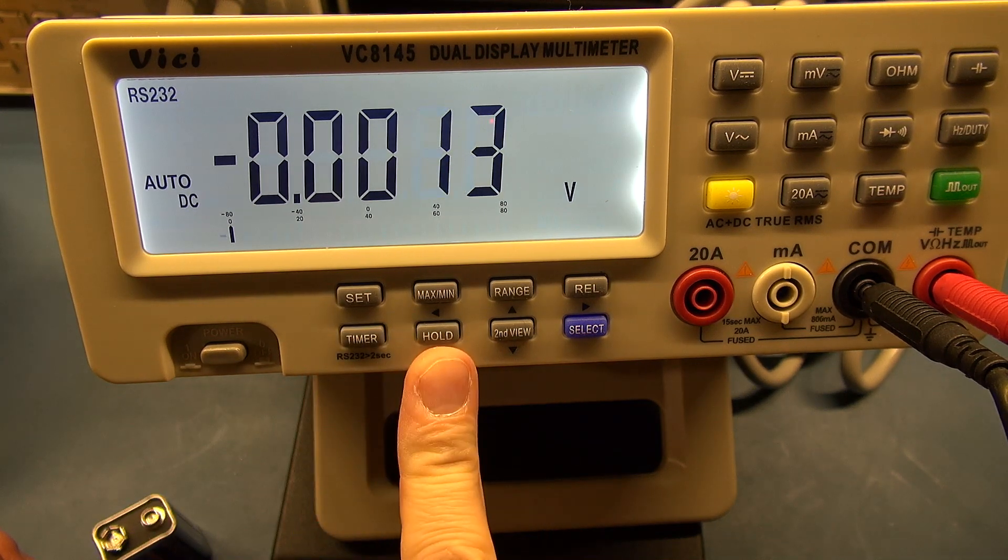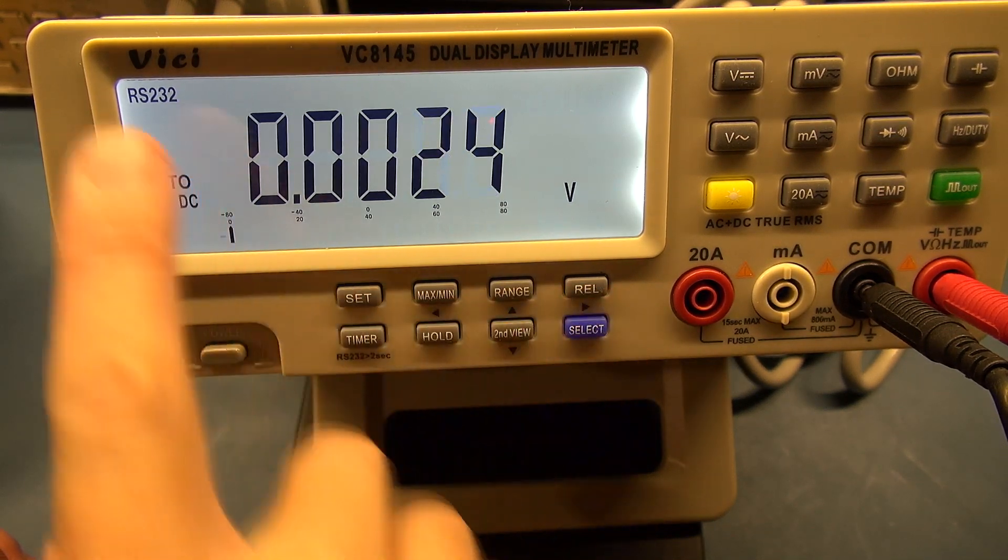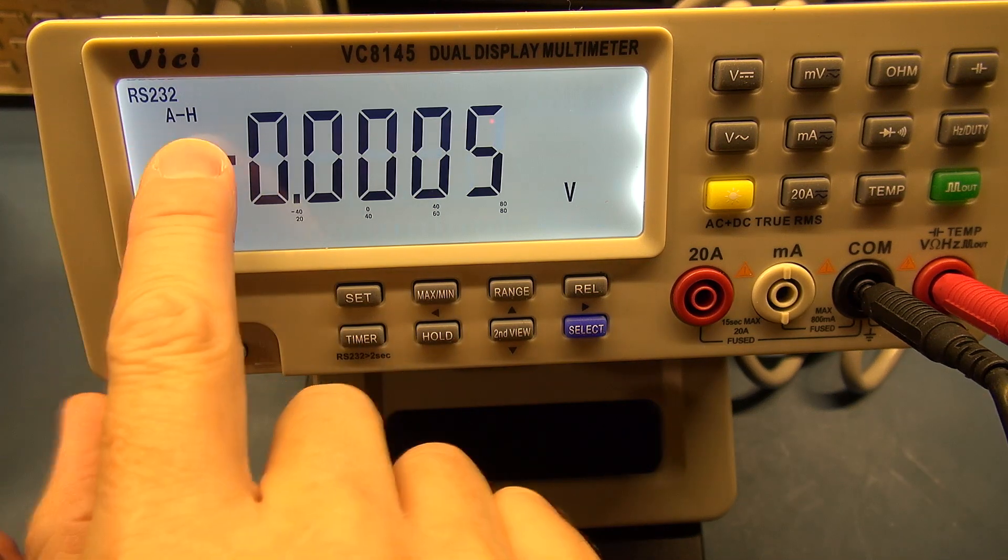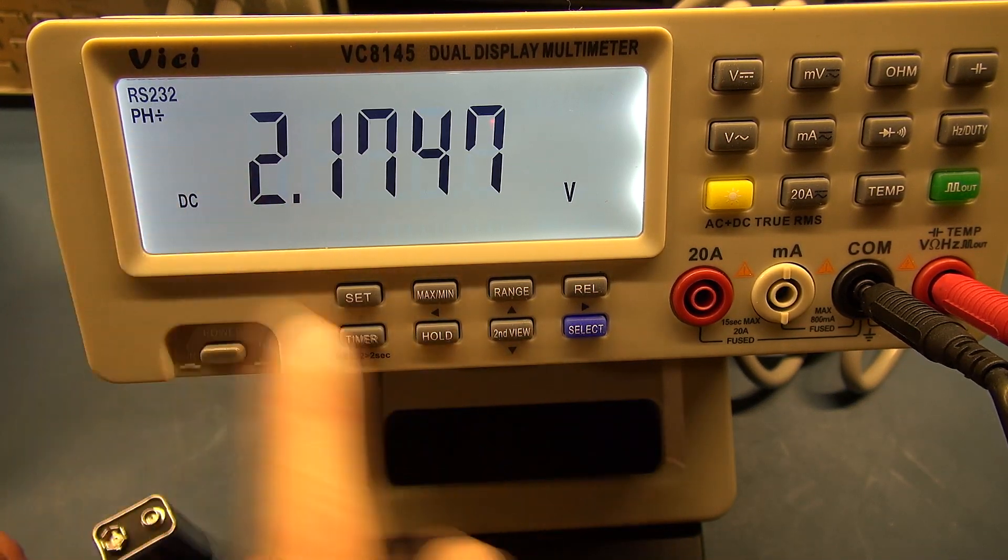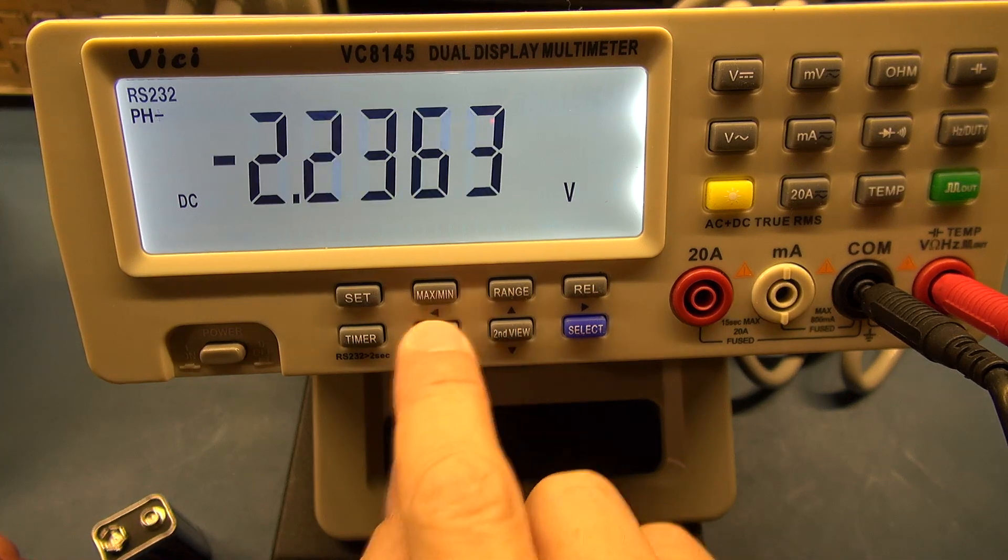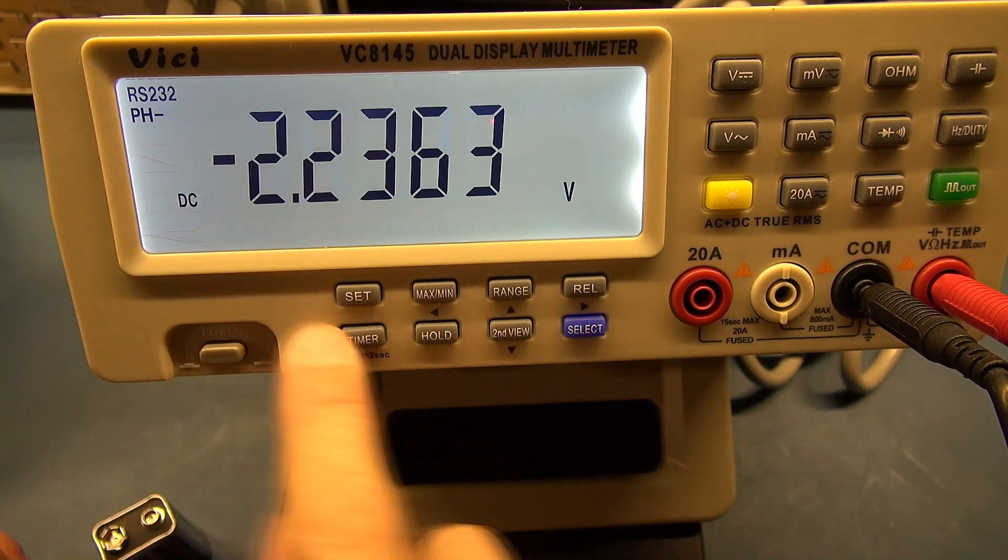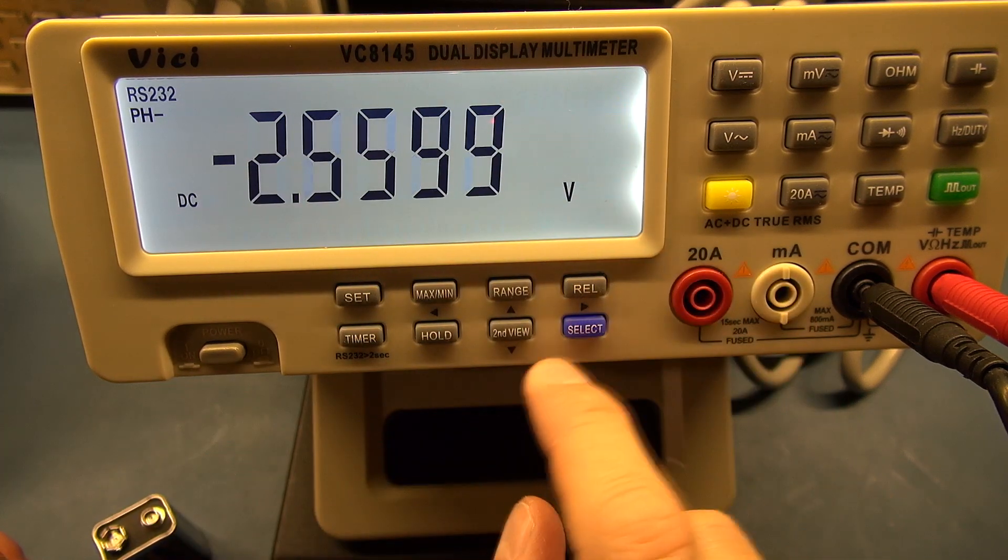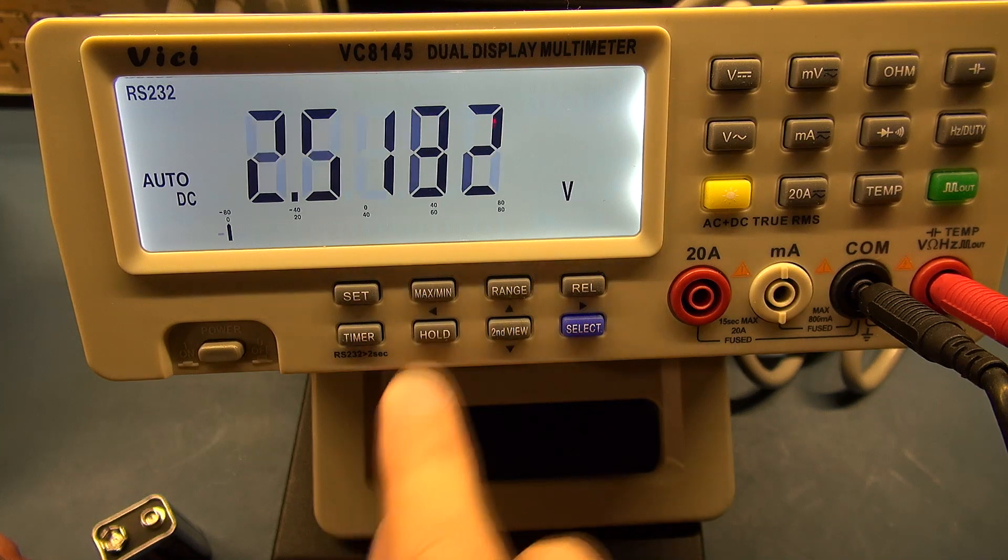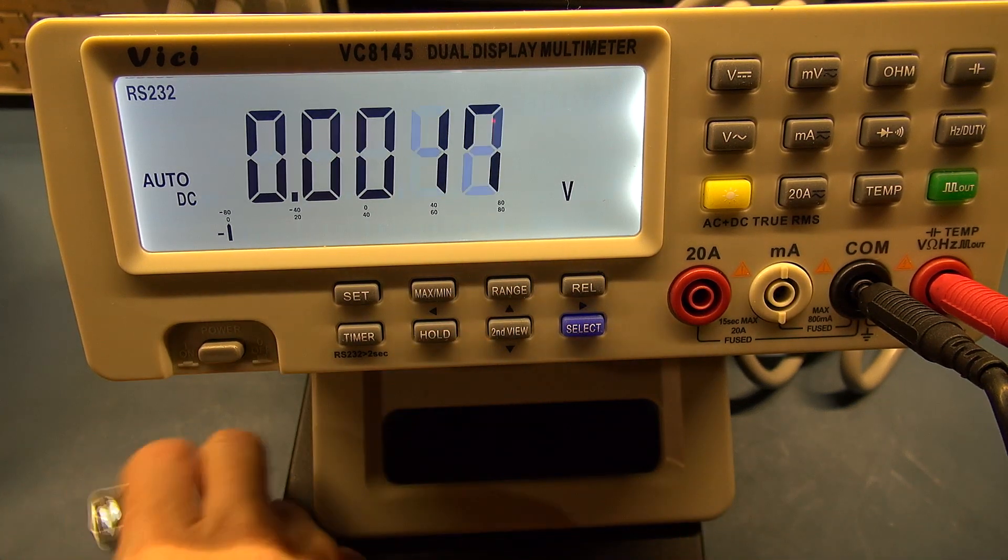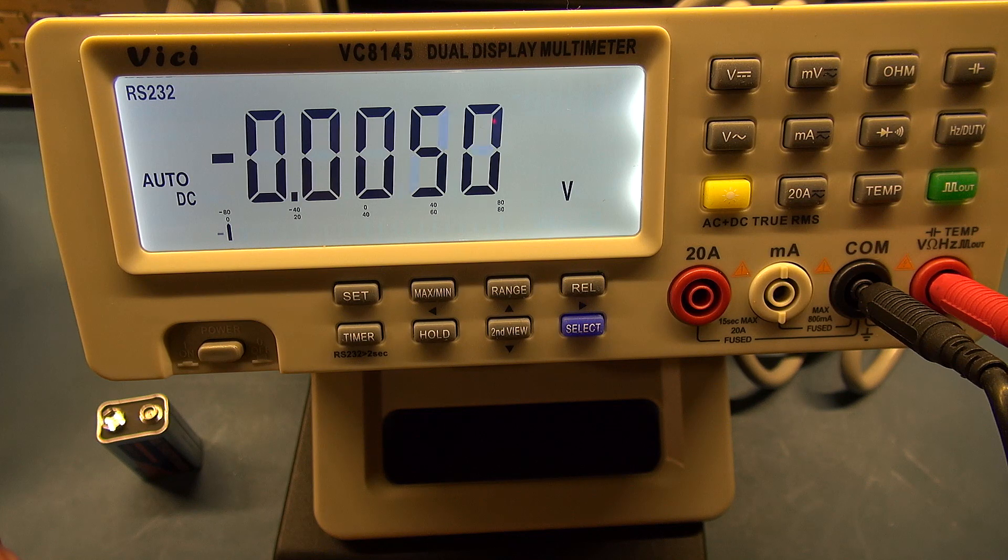So next we're going to take a look at this hold function. Now this hold function has got an auto hold and a peak hold and a minus peak hold. So those are kind of peaks and negative values. So I'm going to switch that off. I'm going to come in again. Now the auto hold, in theory, I've got a 9 volt battery over here. First of all, I'm going to measure its voltage.